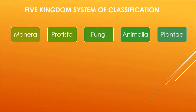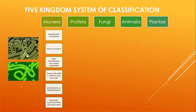In the five kingdom system of classification, all organisms are divided into five kingdoms: Monera, Protista, Fungi, Animalia, and Plantia. Let's study the basic properties of organisms placed in each kingdom one by one.